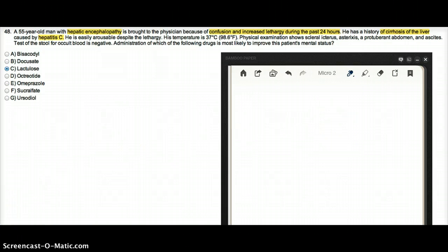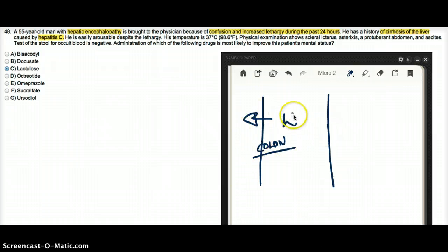And the way it works is lactulose is an unabsorbable sugar. So let's say this is the colon or this is the GI tract. Lactulose cannot be absorbed into the body. So the lactulose is worked on by the bacteria of the colon.